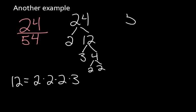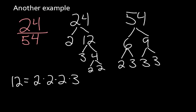For 54, I can split into, well I think that's 6 times 9. 6 can be split into 2 times 3, and 9 can be split into 3 times 3. So for 54, we have 2 times 3 times 3 times 3.